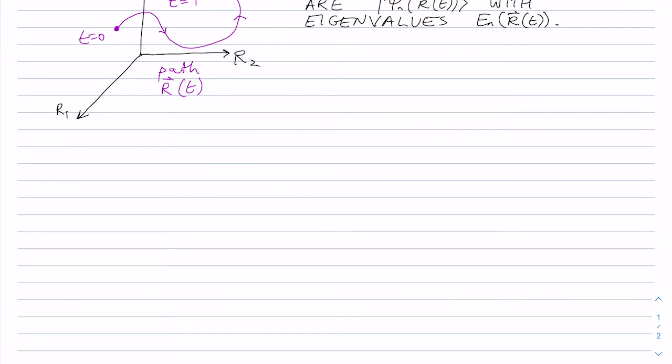So let's write out our Berry phase as we did previously. Remembering that these r's are vectors. And one thing that I said last time is that this quantity here is purely imaginary, which makes this phase purely real.